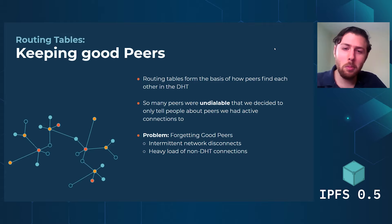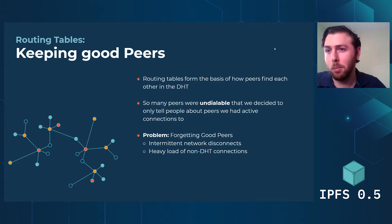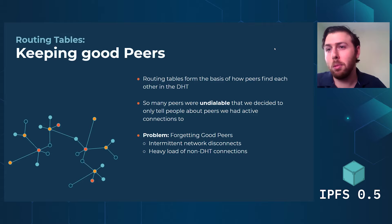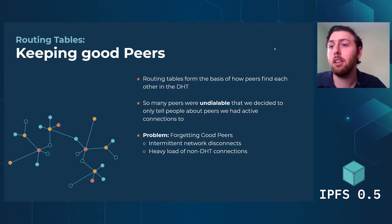This is nice, but what happens if your router blips and you lose all your connections? Now you're going to have to reset up your DHT from scratch from the bootstrappers again, which is very unfortunate. What if your machine is just overloaded? You have a thousand really important BitSwap connections or other application layer things, and so your DHT connections keep getting killed because they're less valuable overall. You still know where these peers are — you can still ask them questions. The fact that you can't maintain a connection because you're out of resources doesn't mean you should forget them.